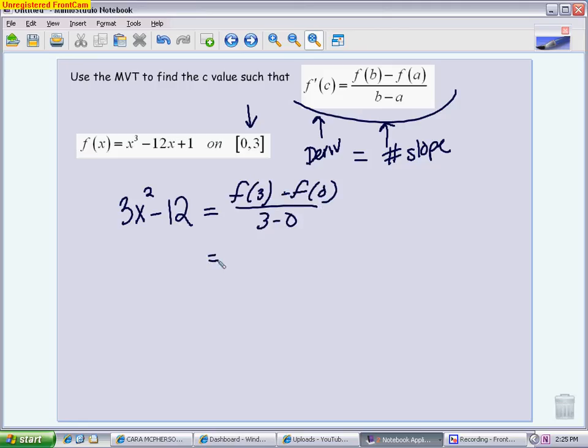So f of 3 means you put 3 into the original function. Everything on the right side is going into the original function. When you put 3 in, you're going to get 27 minus 36 plus 1. Here are things you can do on your calculator. You get negative 8. When you put 0 in, you're going to get 1. So you end up getting negative 9 over 3, giving you a slope of negative 3. So what this problem is essentially asking you is, when is the slope negative 3? You have a derivative on one side. You have the numeric value on the other.